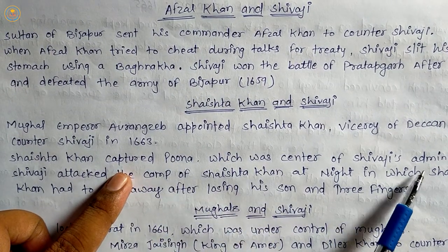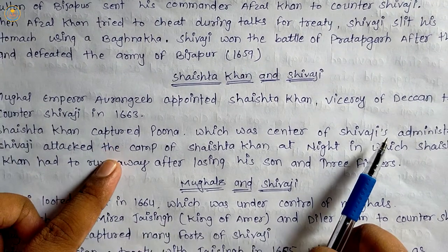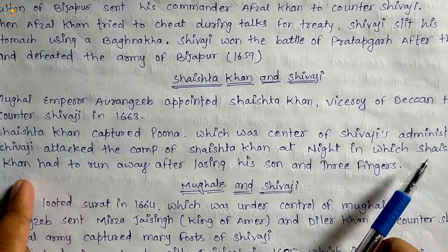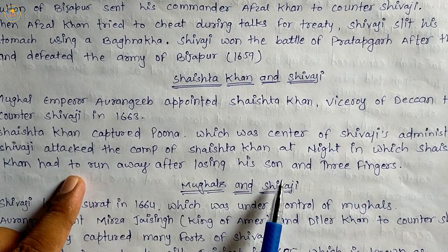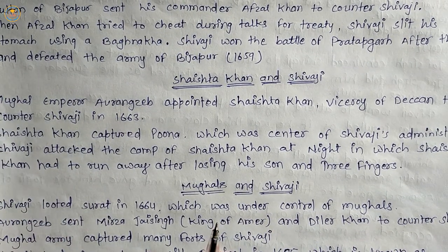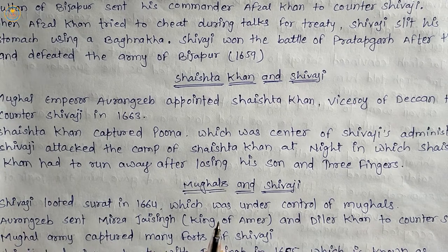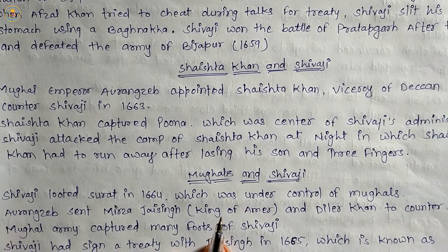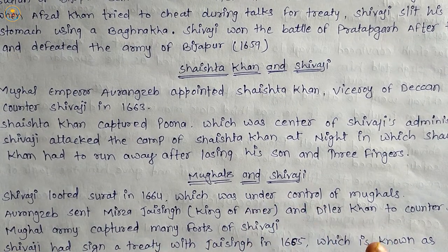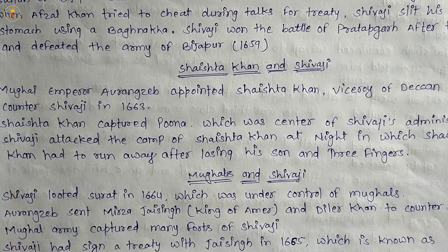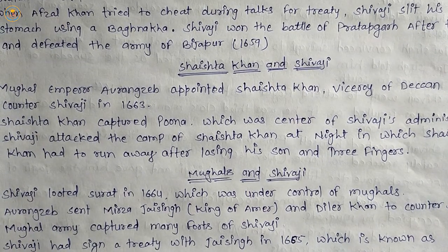Shivaji attacked the camp of Shaista Khan at night, in which Shaista Khan had to run away after losing his son and three fingers. After that, Aurangzeb sent his son Muazzam and Marwar ruler Jaswant Singh, but both were unsuccessful.